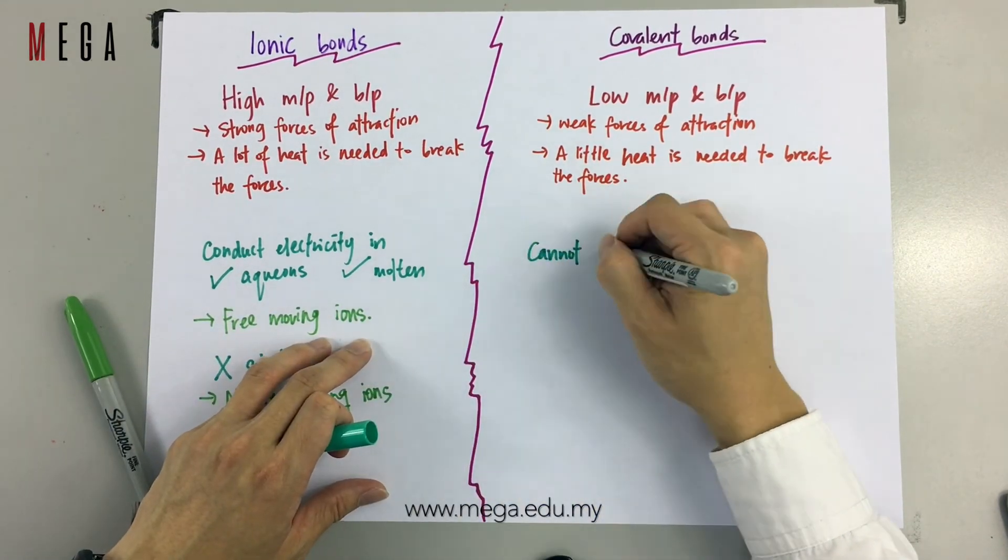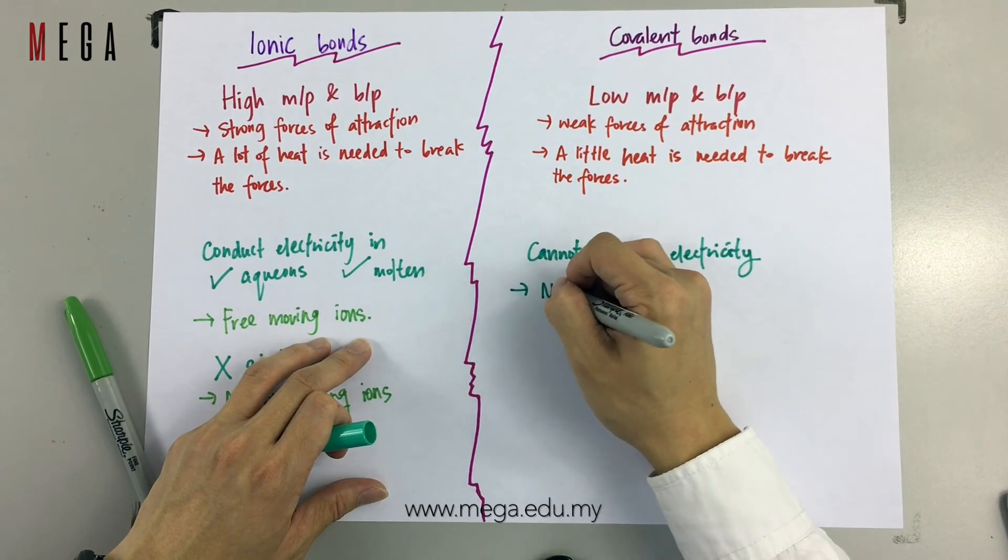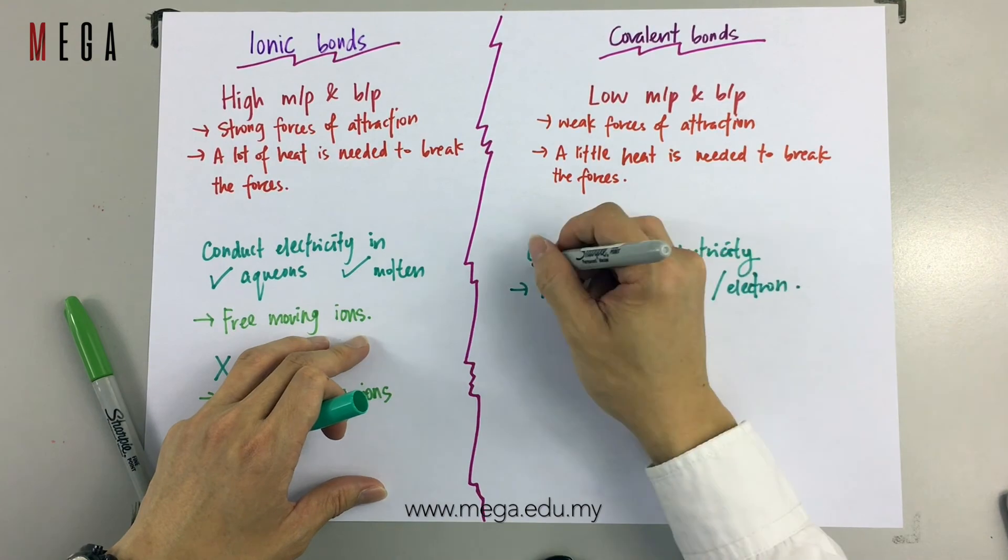Whereas for covalent compounds, they cannot conduct electricity because there is no free moving ions or electrons. Remember, that's all. Thanks.